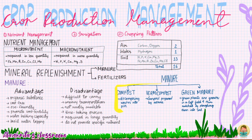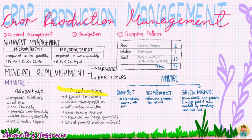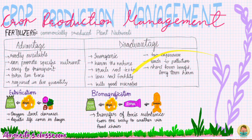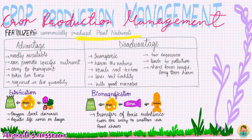Manures are of three types: compost, vermicompost, and green manure. The advantages and disadvantages of manure are discussed here — you can pause the video and check it. The second one is fertilizers. Fertilizers are commercially produced plant nutrients. Their advantages and disadvantages are also mentioned here.